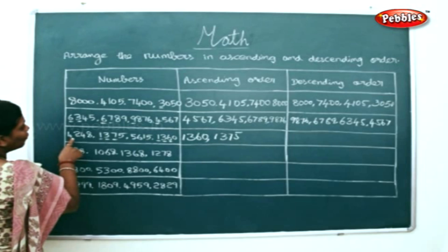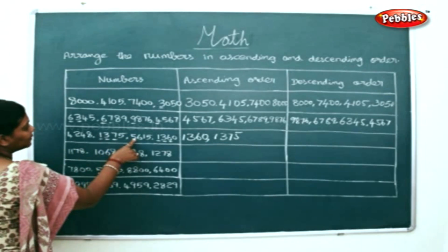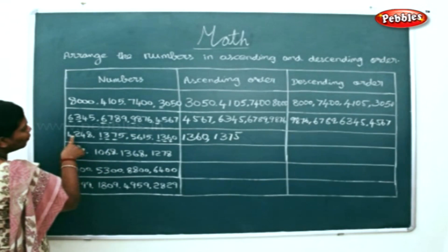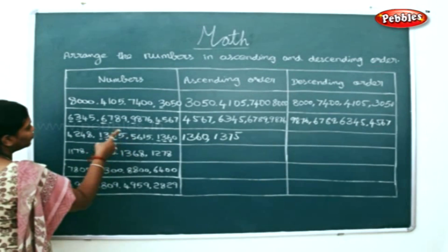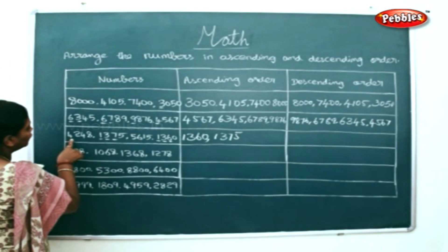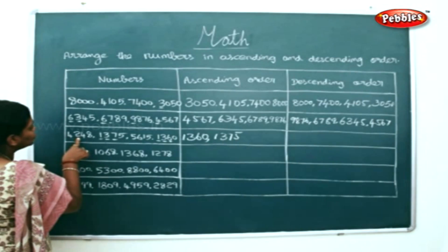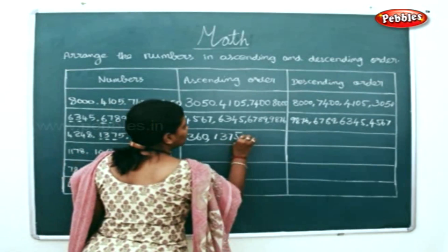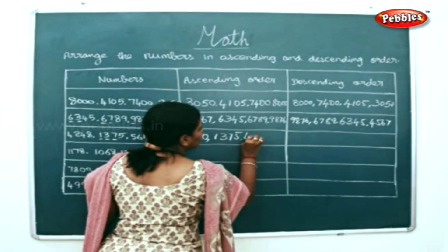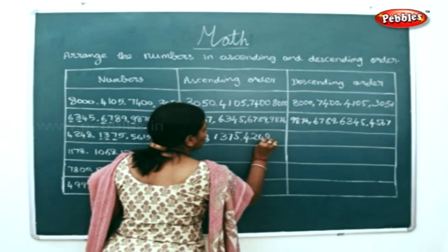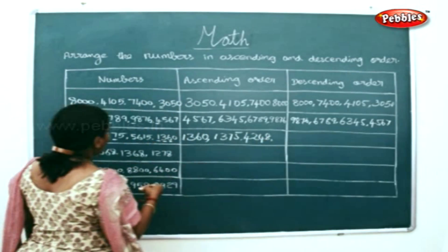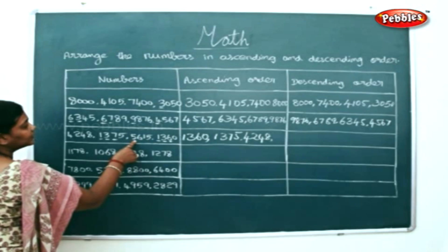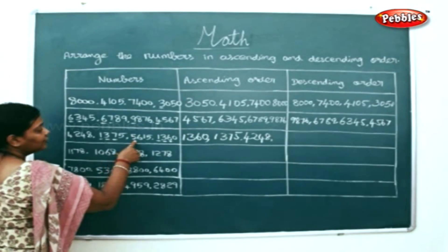And then, 4 and 5 — compare the thousands places first. 4 and 5. So, 4 is lower than 5. So, 4248. And then the highest number would be 5650.